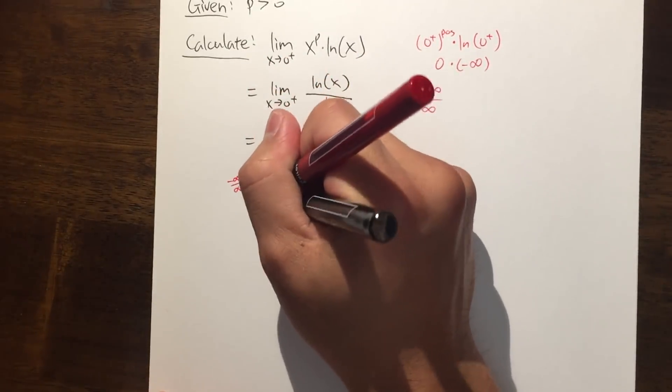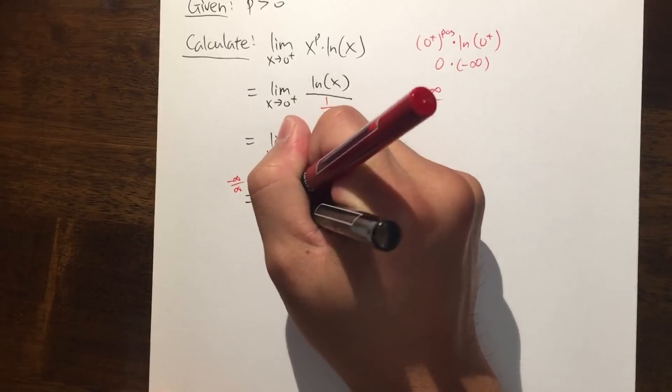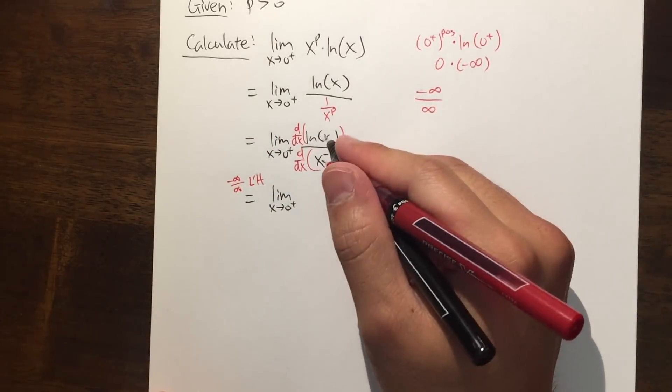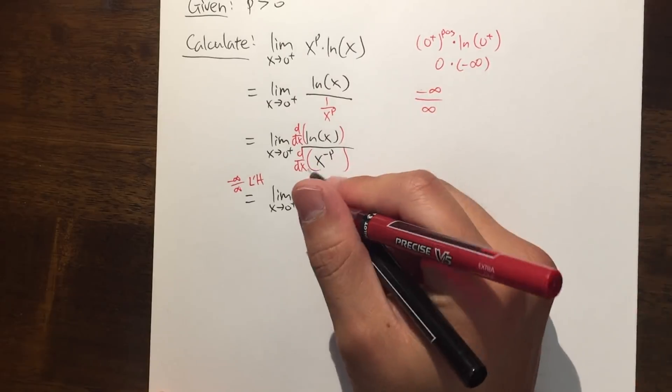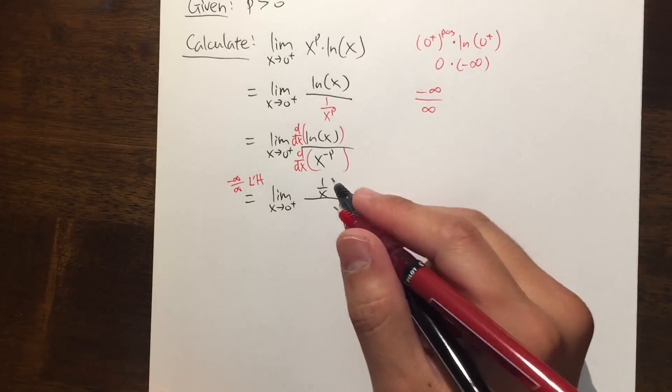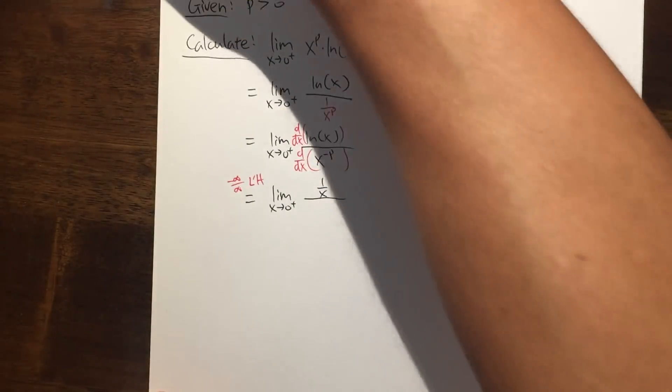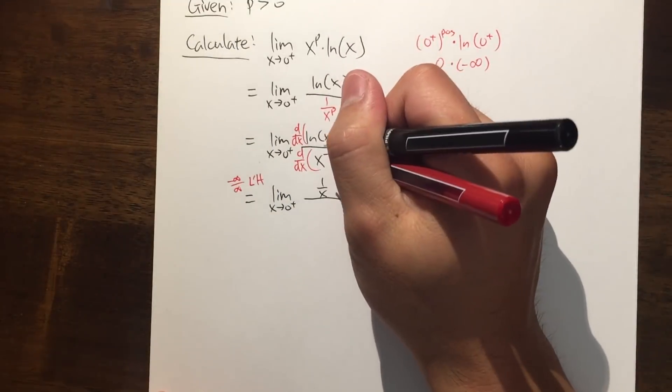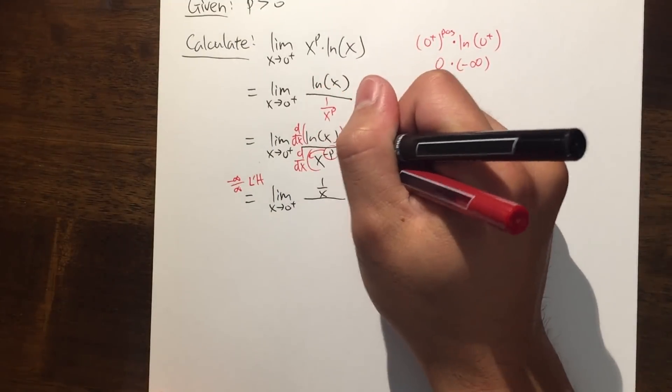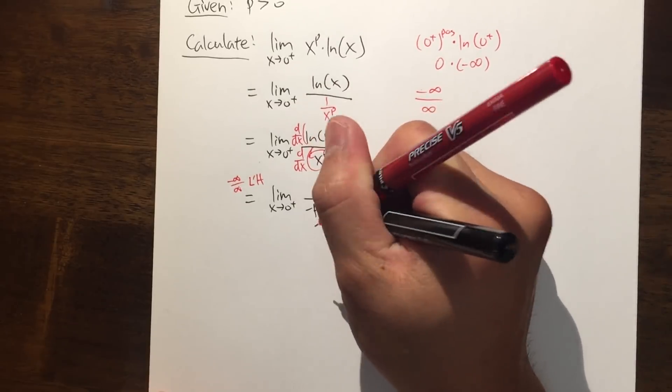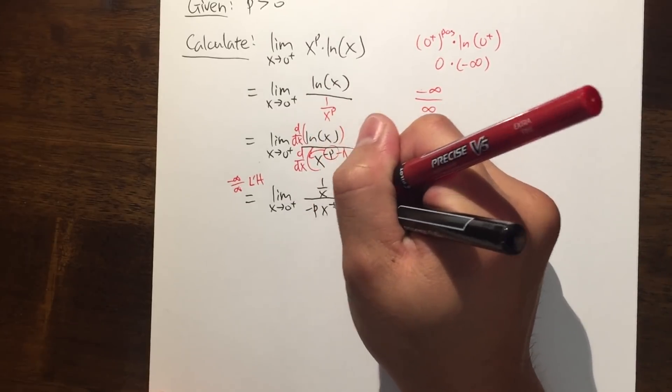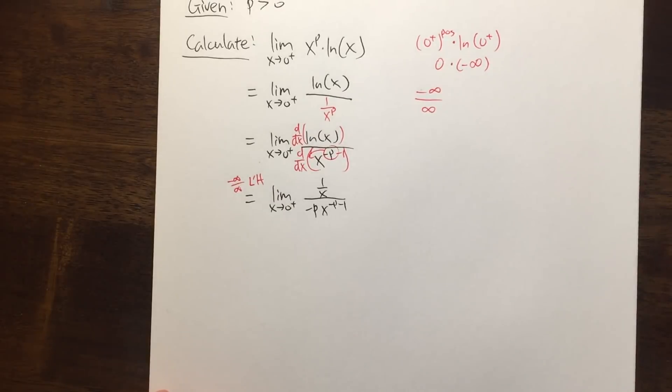Anyway, this right here is the limit as x goes to 0 plus. And the derivative of ln x is just 1 over x. And the derivative of this, be sure you bring the power to the front and then minus 1. So we have negative p times x to the negative p minus 1 power.